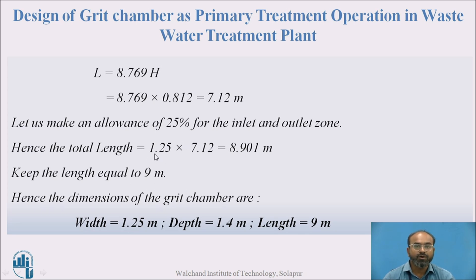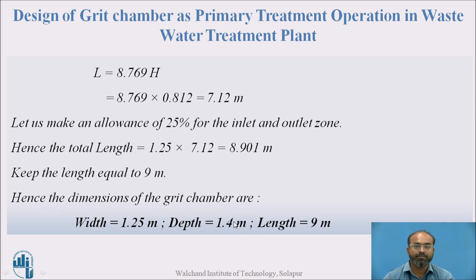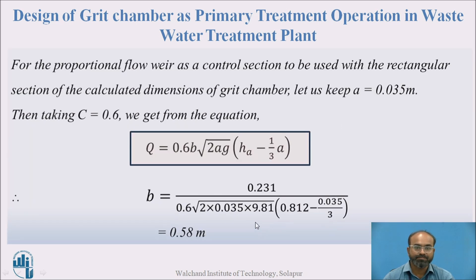So the final dimensions of the grit chamber are: width = 1.25 m, depth = 1.4 m, and length = 9 m.